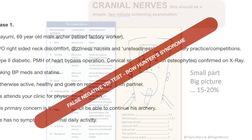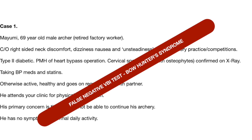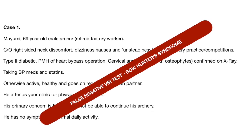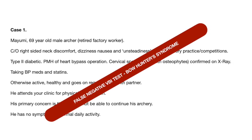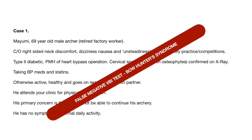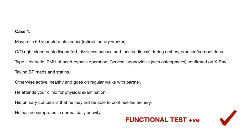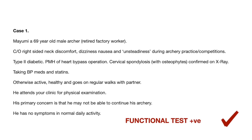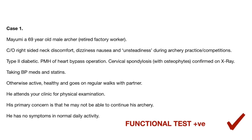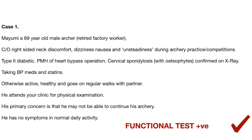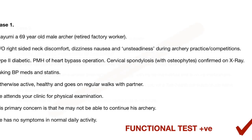Let's look at the cases we considered. First, Mayumi. Mayumi had a false negative VBI test, linked to not testing him in his functional testing position — the bow hunter's position — and that was possibly the reason for his negative test. A functional test would have found some of his symptoms: you would have been able to see some nystagmus on eye movements, and he certainly started to report dizziness, unusual feelings, and even an impending feeling of losing consciousness heading toward a drop attack if left in that position for a long period of time.